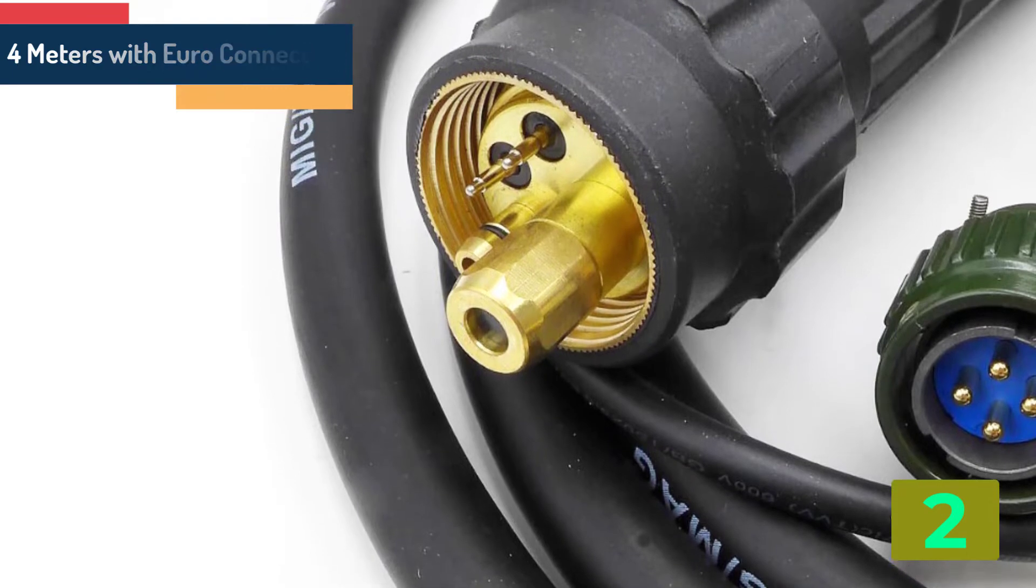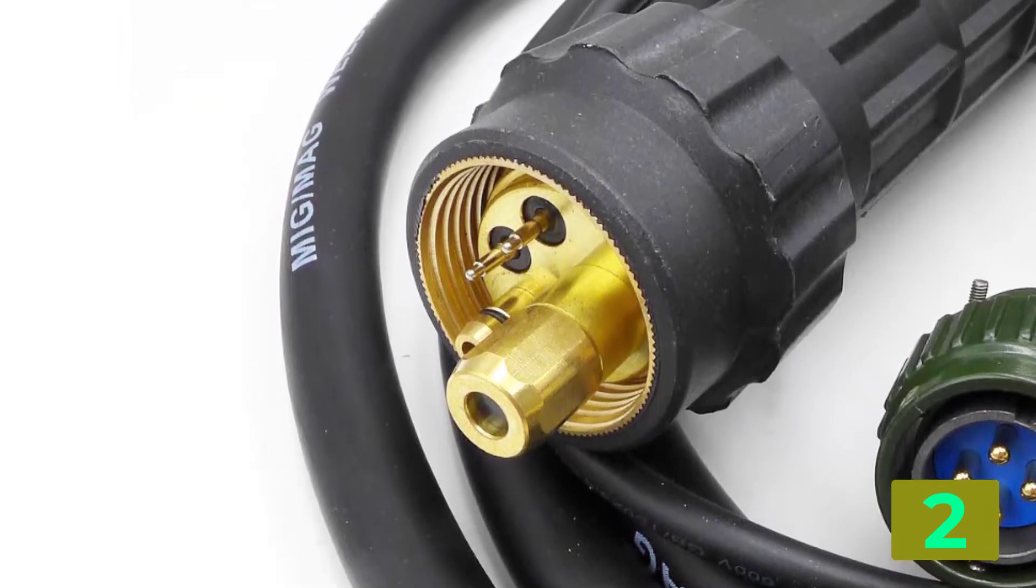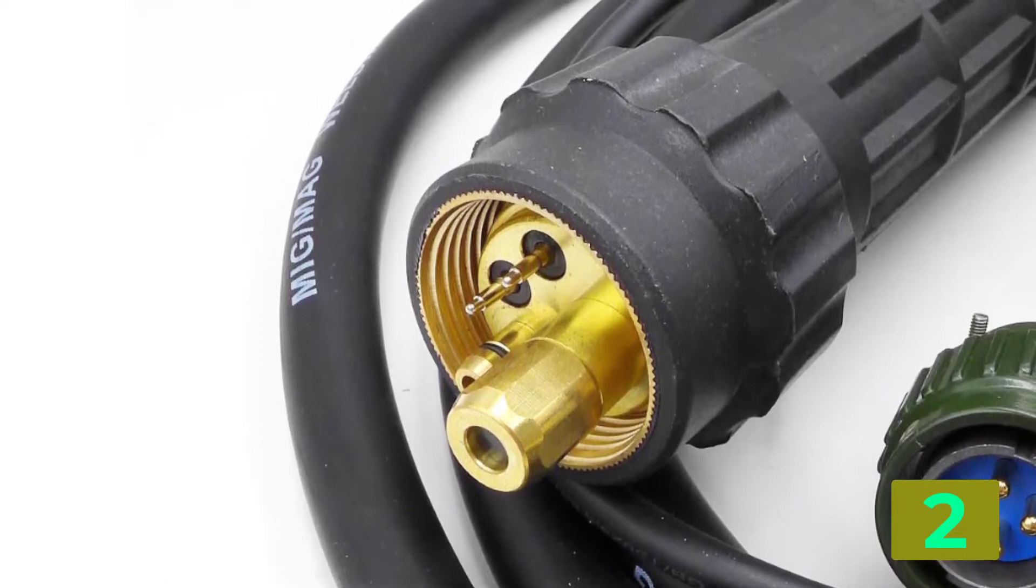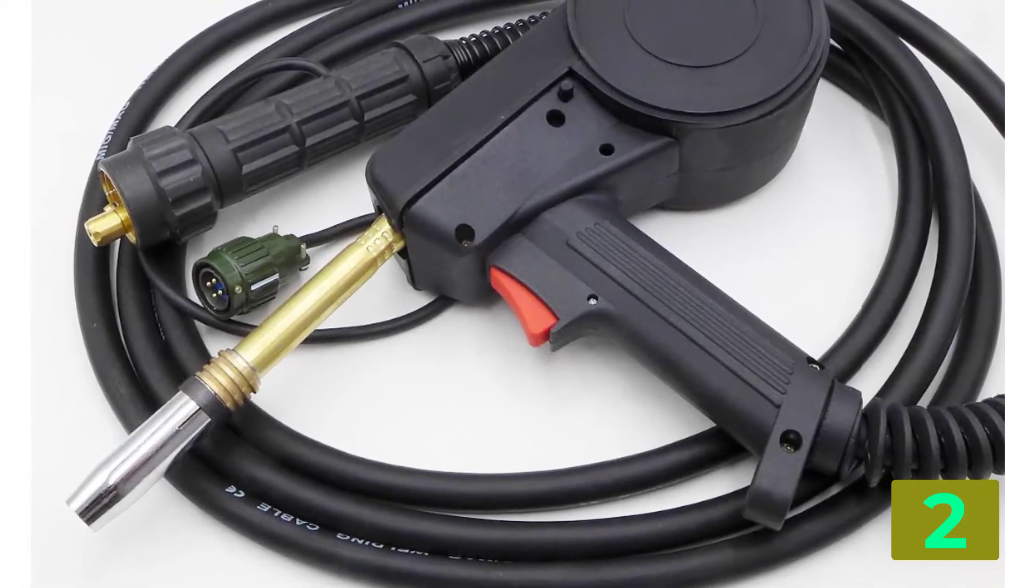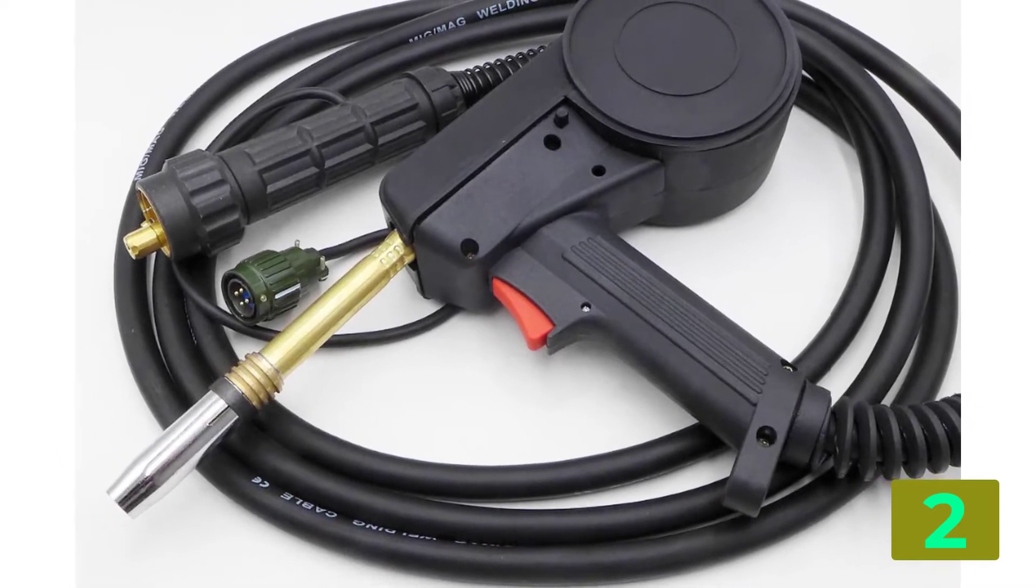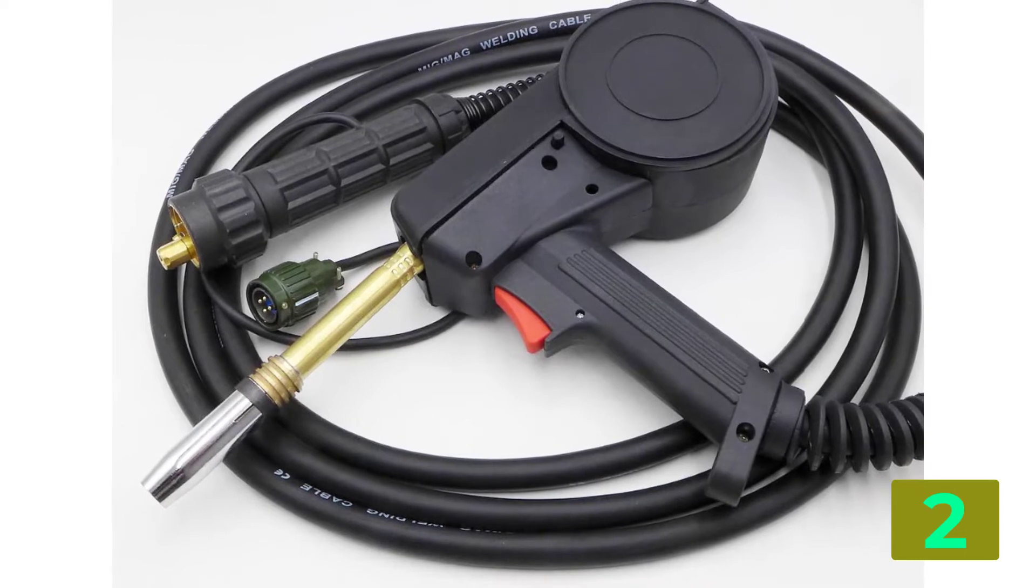Specifications: Brand name GINSLA, Certification none, Origin CN Origin, Type Welding Torch, Model number 24 KD Spool Gun Welding Torch MIG Spool Gun MIG Gun Aluminium Spool Gun, Welding type MIG Torch, Welding capacity 200A at 35% duty cycle.